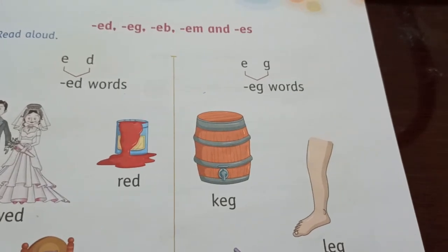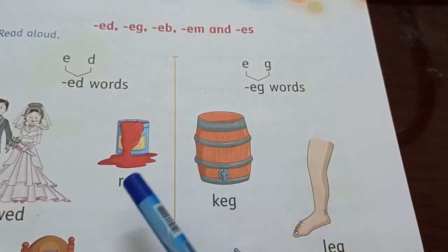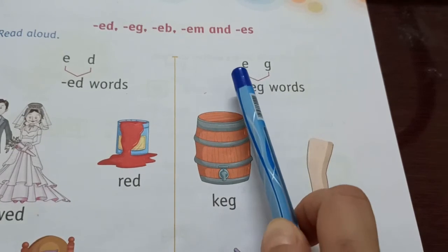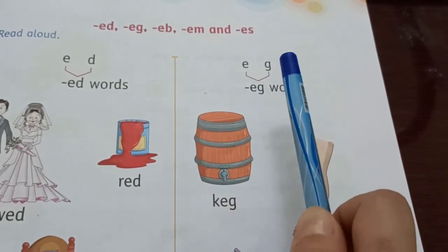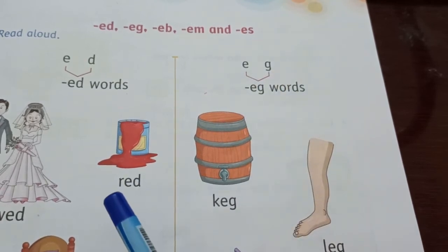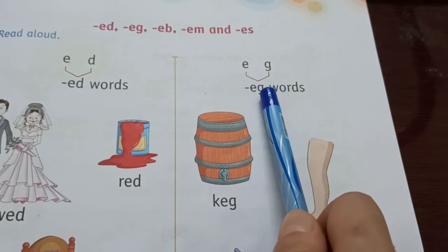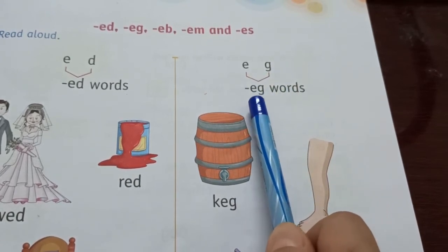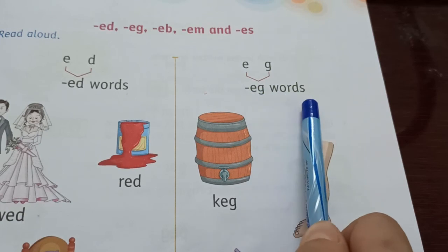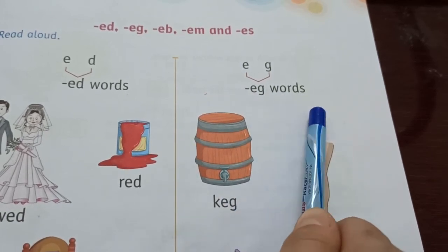So children, today we will learn EG words. E sounds 'E', G sounds 'G'. And when we combine this together it becomes EG words. So today we will learn EG words.